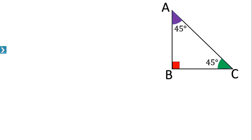If two angles are equal, then the sides opposite to those equal angles are also equal. The side opposite to angle C is AB, and the side opposite to angle A is BC. So AB is equal to BC. Let AB = BC = x. Triangle ABC is therefore an isosceles triangle.